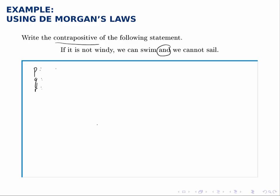So p will be it is windy, not it is not windy. So we'll avoid the word not in our original statements and we'll just use negations where necessary.